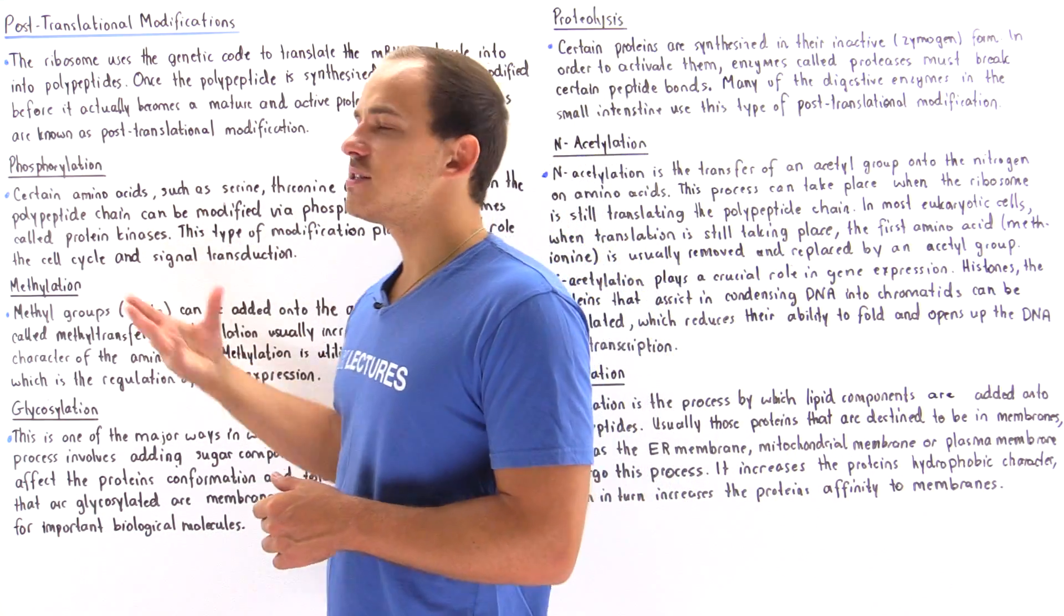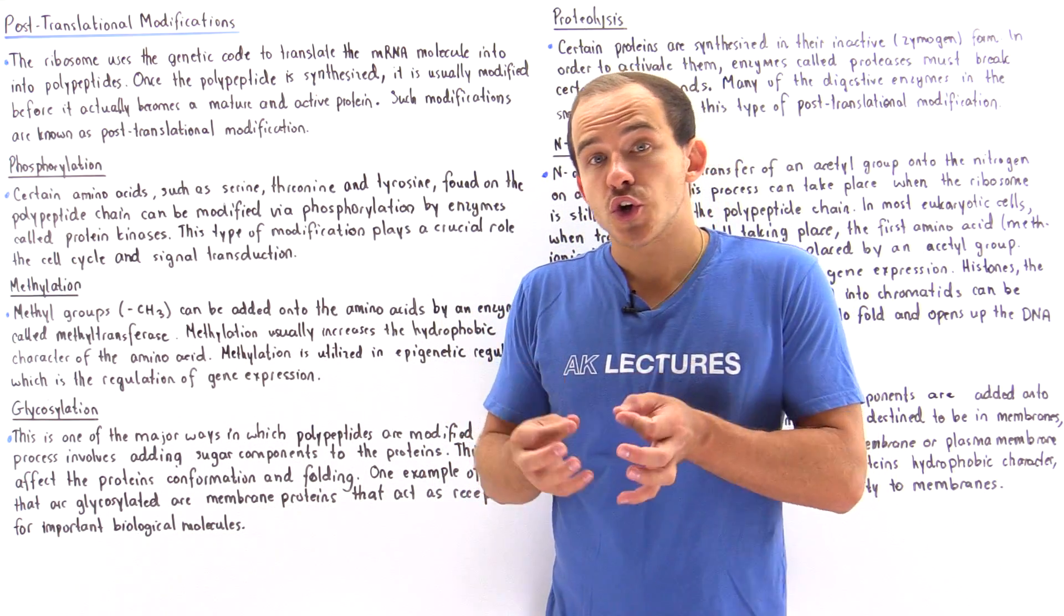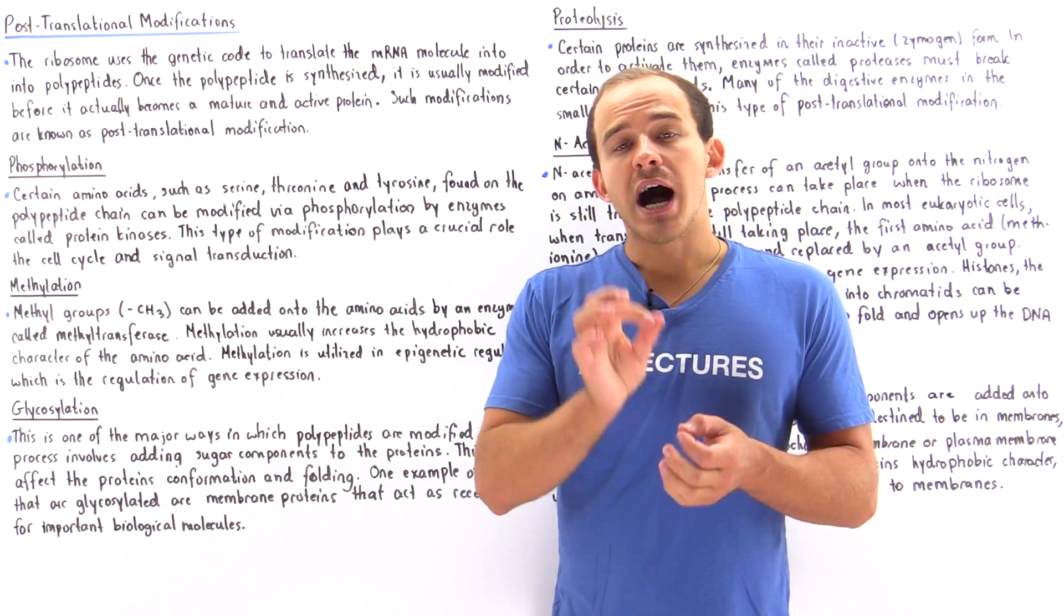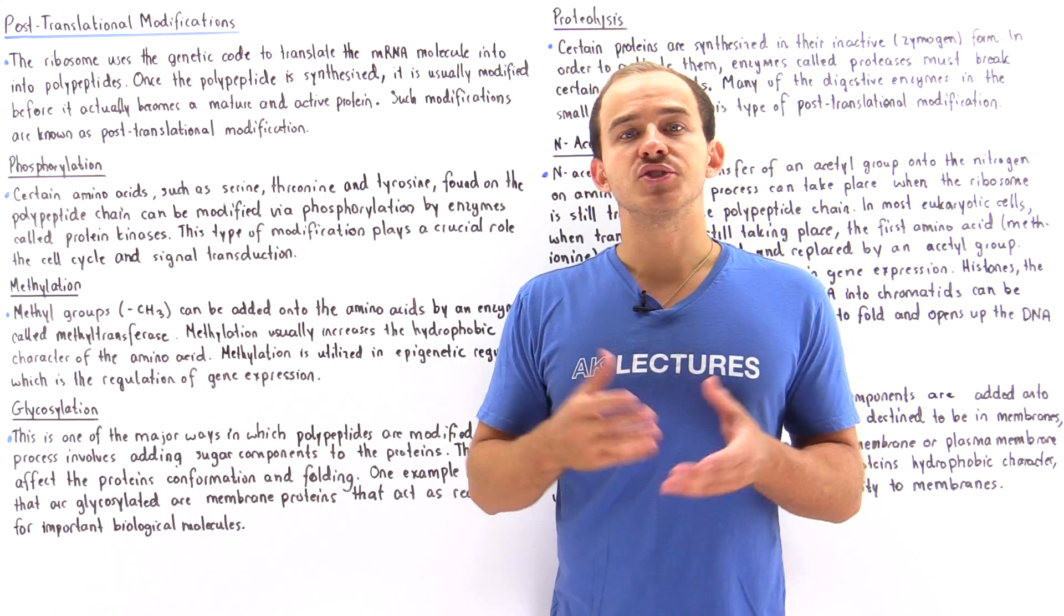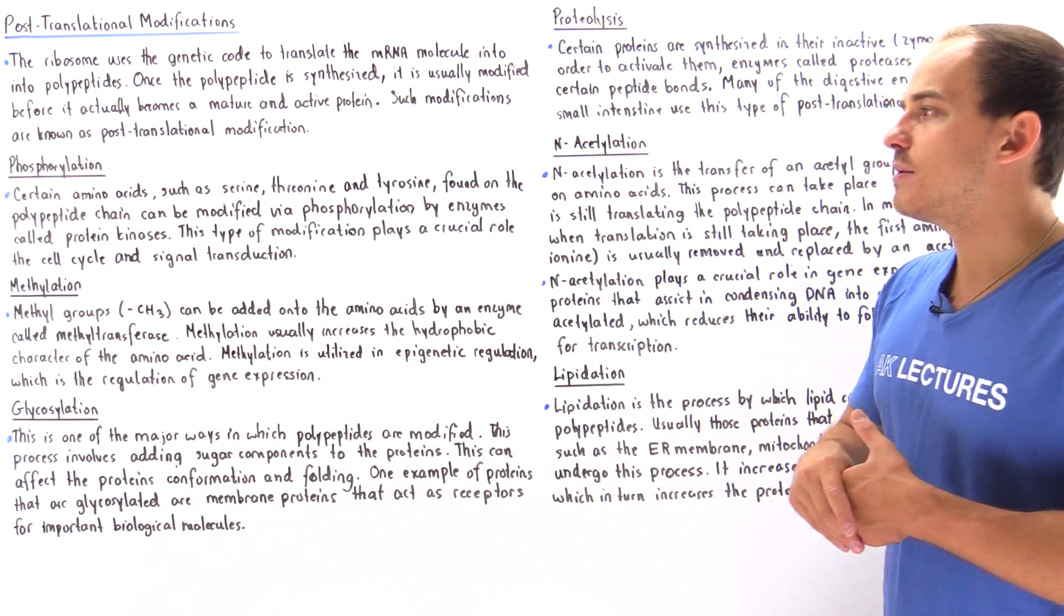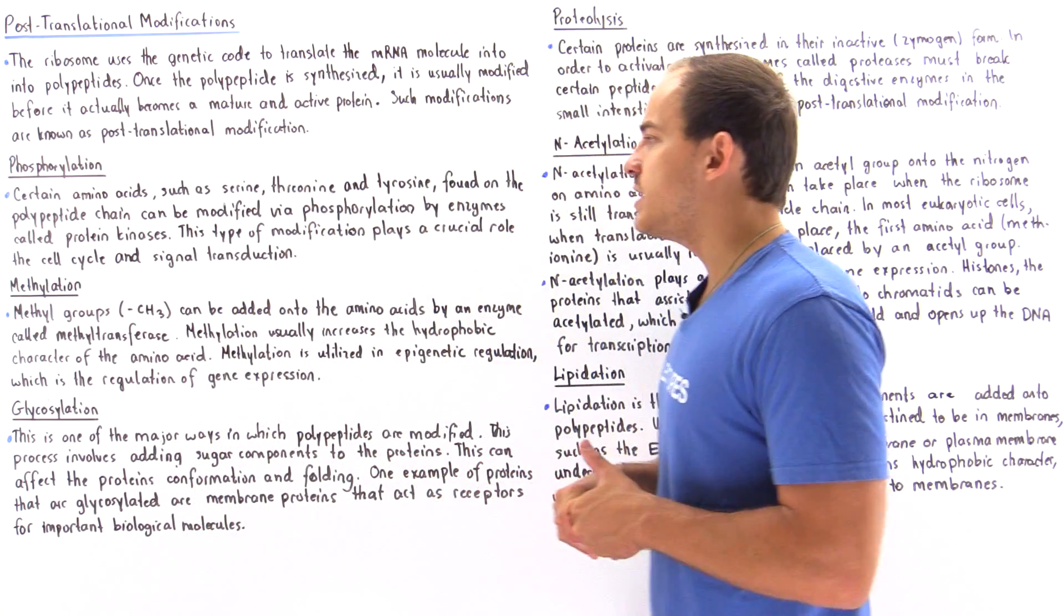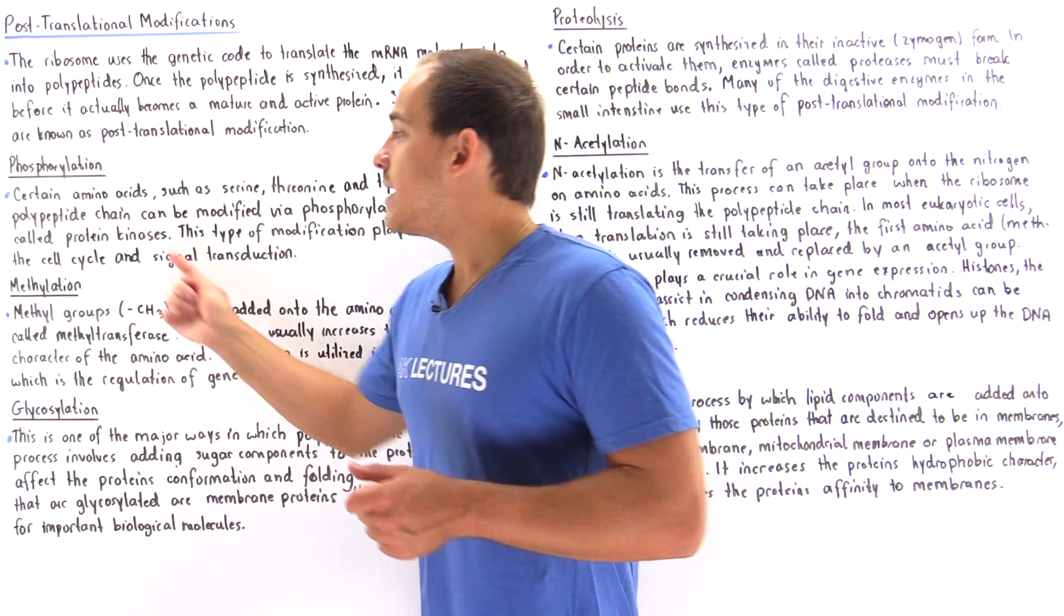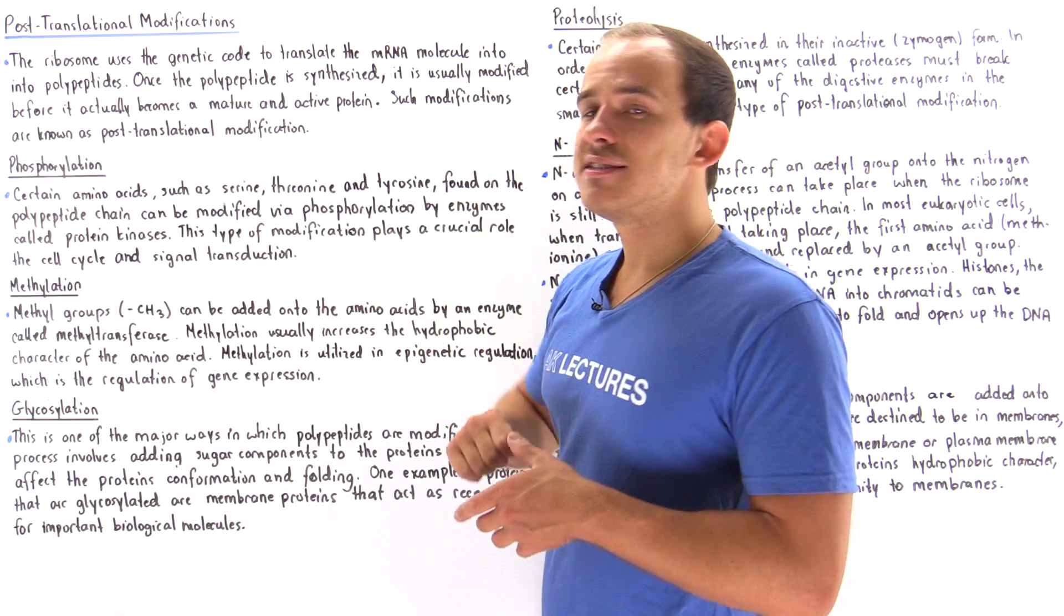Phosphorylation is the addition of a phosphate group onto certain amino acids, usually serine, threonine, and tyrosine on our polypeptide chain. The enzyme that catalyzes the addition of the phosphate group is known as protein kinases. By adding our phosphate group onto our polypeptide chain, we're increasing the hydrophilic character of that protein. This type of modification is usually used in the process of the cell cycle, cell growth, as well as signal transduction.